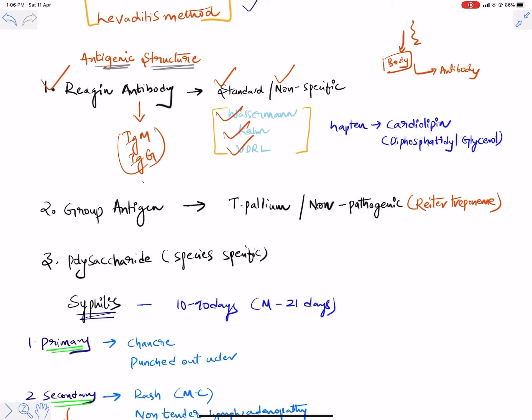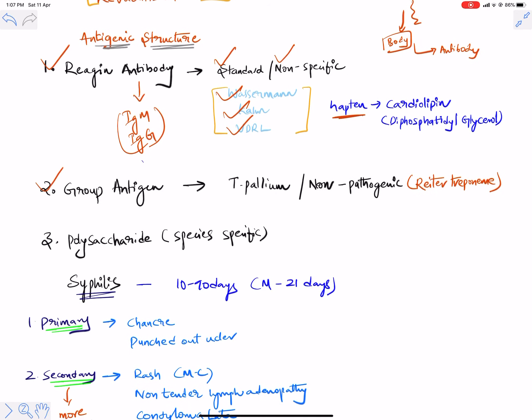There is something called a hapten — cardiolipin. Cardiolipin is a chemical protein-like structure that helps in diagnosing with these non-specific tests. The reagin antibody used in non-specific tests is cardiolipin.